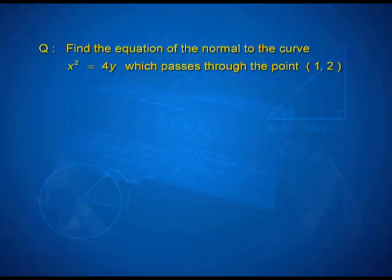Here is another important question — pay attention to the statement. Find the equation of the normal to the curve x² = 4y which passes through the point (1, 2). What is significant and risky about this question is that tangents and normals are constructed at a point on the curve. Here, the normal is passing through the point (1, 2), but this point is not the point of contact between the normal and the curve. So you cannot use this directly as your (x₁, y₁) and then proceed with finding the derivative at this point.